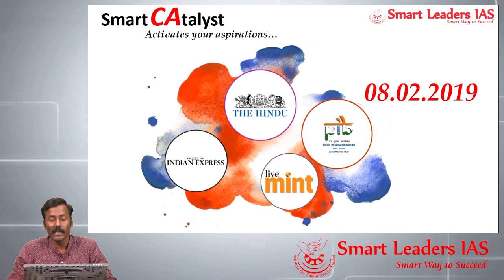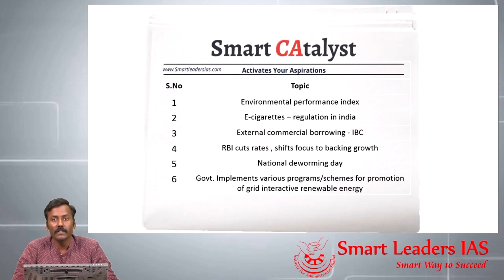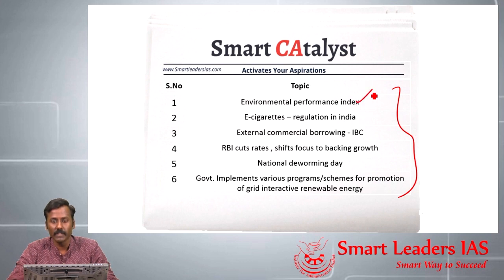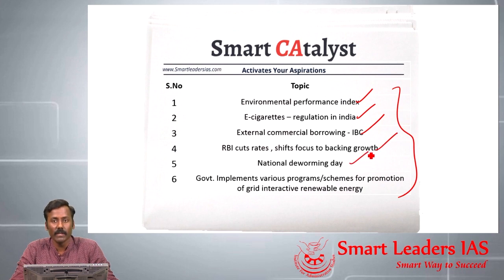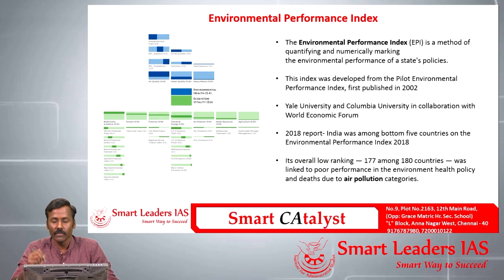Hi all, welcome to Smart Catalyst, 8 February 2019. Today we will be discussing six topics: the first is related to the Environmental Performance Index; the second is e-cigarettes and its regulation in India; the third is recent easing of ECB norms by RBI to help the insolvency process; the fourth is the Monetary Policy Committee review of RBI; the fifth is National Deworming Day; and the last is government initiatives to promote renewable energy in India.